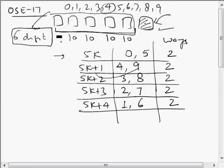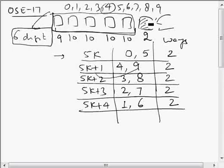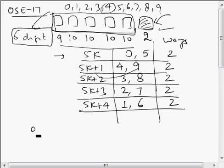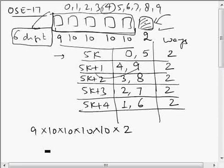You can see that irrespective of what the sum of the five digits is, there are always exactly two ways to fill the sixth box. By the fundamental principle of counting, the total number of six-digit numbers is 9 × 10 × 10 × 10 × 10 × 2, which equals 18 × 10 to the power 4.